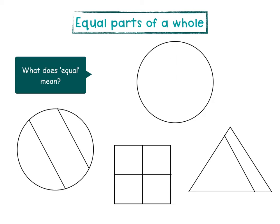Young learners do not know yet what the word equal means. Describe it as being when things are the exact same shape and size. Give them pictures with equal and unequal parts, or cut various foods to make the pieces equal and unequal. Allow the learners to look closely at the parts and compare them to determine whether or not they are equal. It is also important for learners to know and understand that whole refers to the object before it is cut and divided into separate parts.